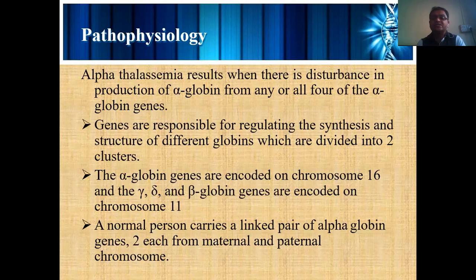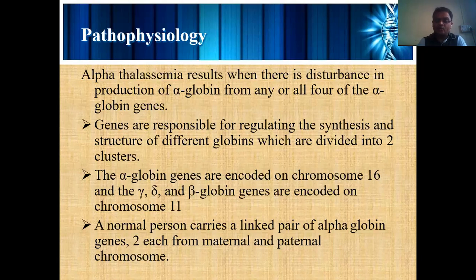Beta globulins are encoded on chromosome 11. A normal person carries a linked pair of alpha globulin genes — two from each of the maternal and paternal chromosomes — which are present in their existence.